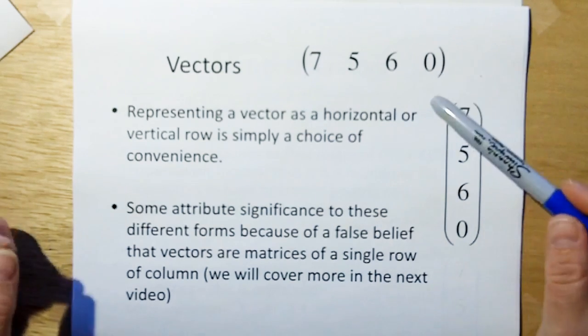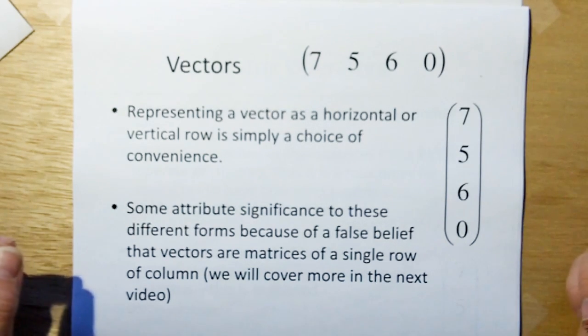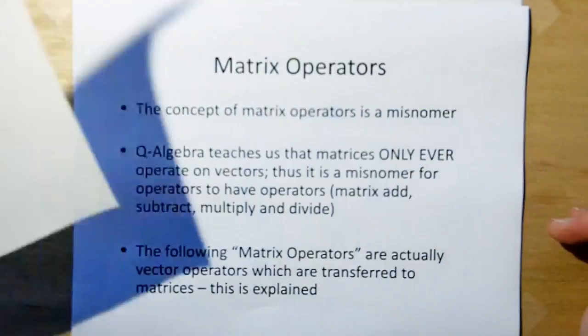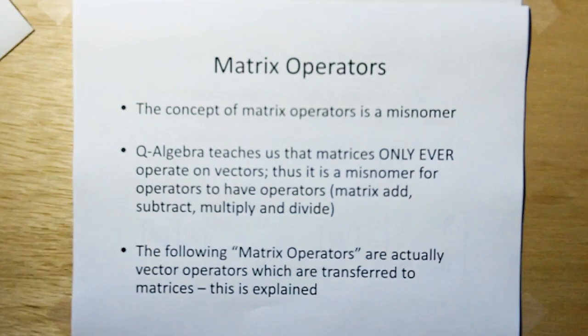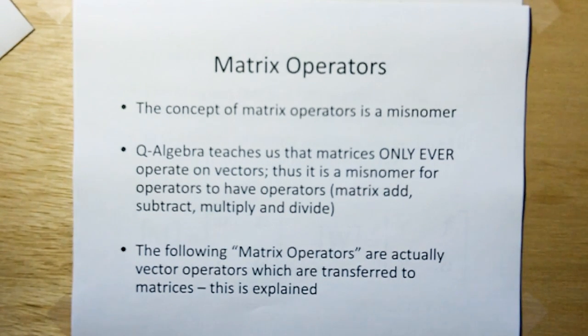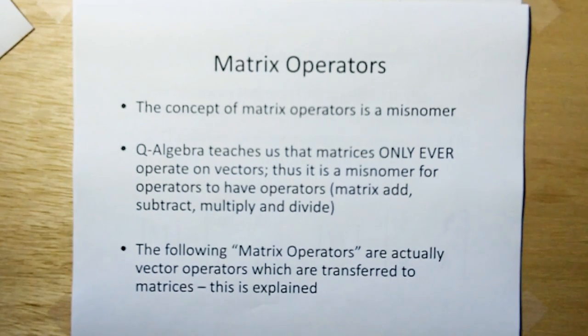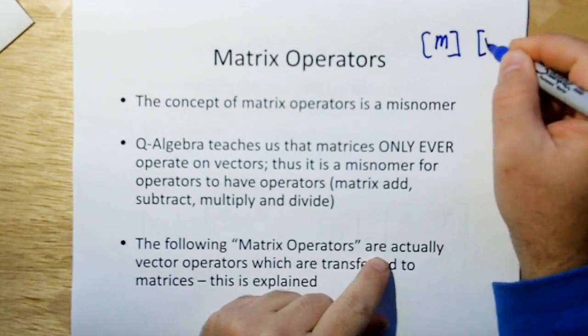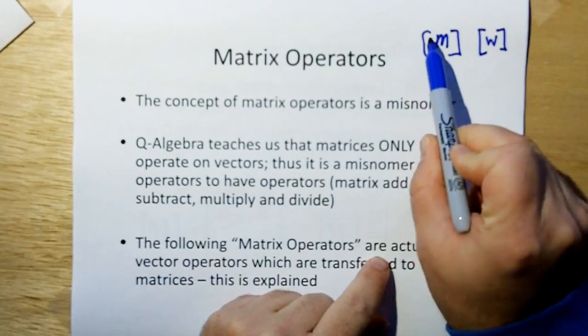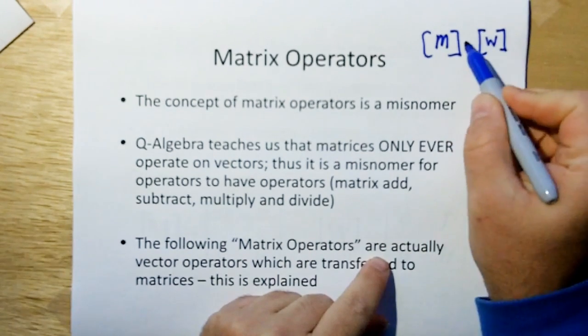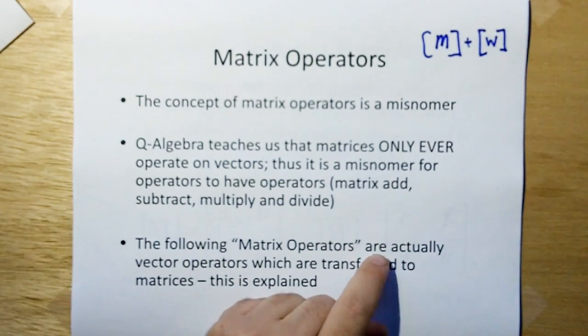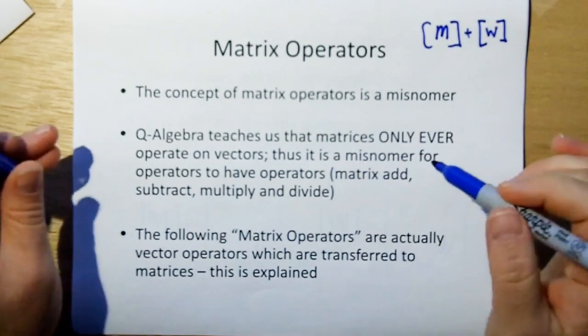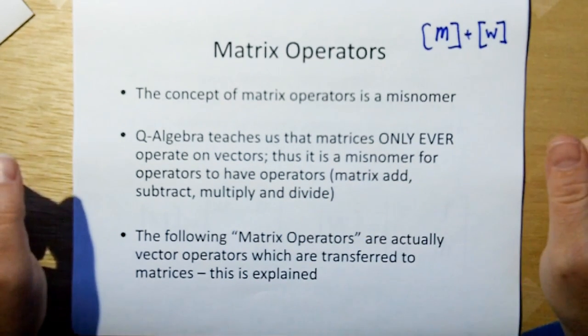Representing a vector as a horizontal or vertical row is simply a choice of convenience. Some people attribute significance to these different forms because of the false beliefs that vectors are matrices of a single row or column. We'll cover that in more detail in the next video. Now let's talk about matrix operators. The concept of a matrix operator is a misnomer.